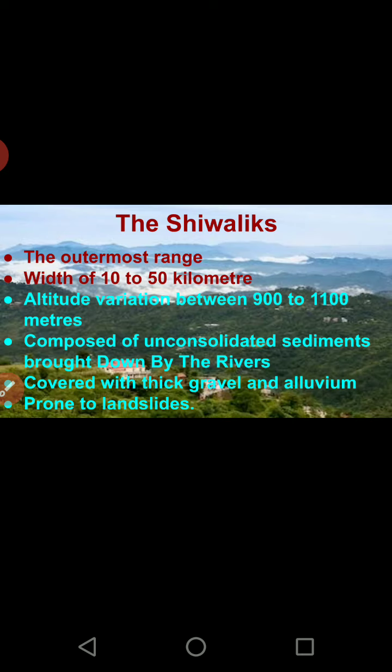The third range is the Shivaliks — the outermost and southernmost range. Remember, Himadri was the innermost range. The width of the Himalayas here is 10 to 50 kilometers, and the altitude is very less — only 900 to 1100 meters. So from 6000 meters in Himadri, to 4500 meters in Himachal, to just 900–1100 meters in the Shivaliks.